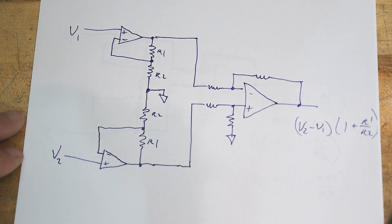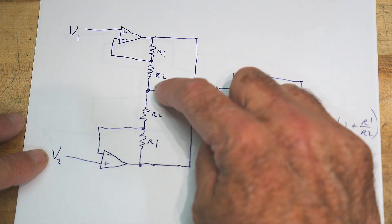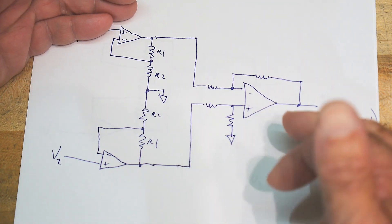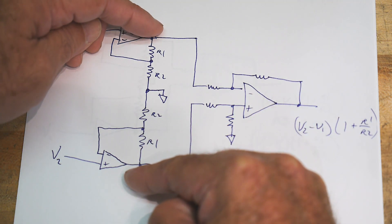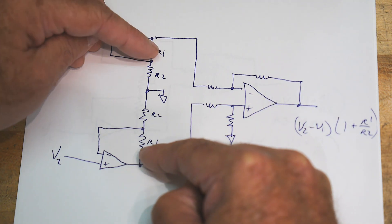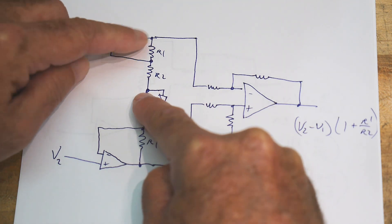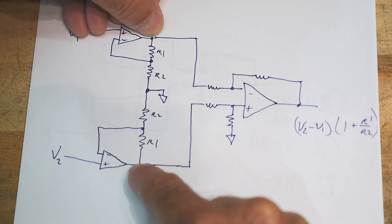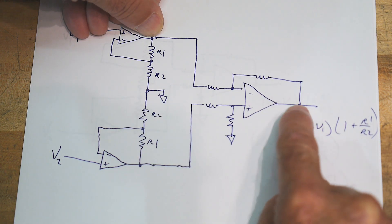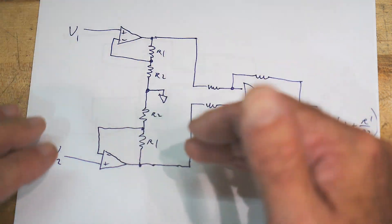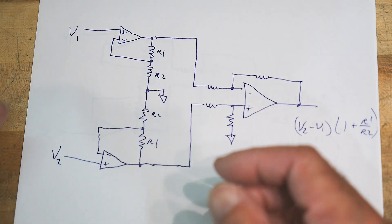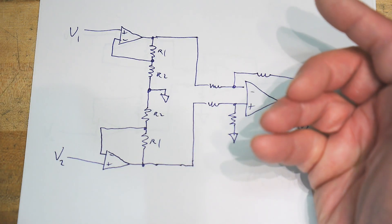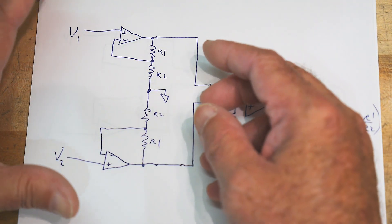But if we start thinking about it, what if I take out this ground? What happens when I take out this ground? If this thing is taking the difference between these two and R1 equals R1 and R2 equals R2, then this is the center point between these two and this is the exact center. Isn't the exact center exactly what we want on the output? You can convince yourself - does it really matter if I reference it to ground or can I reference it to something else? Is it still going to give me the same gain?